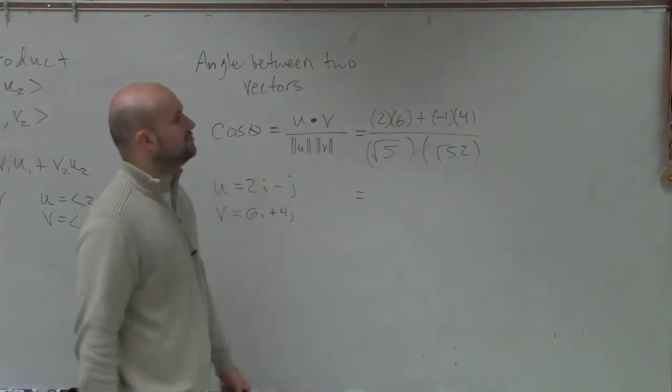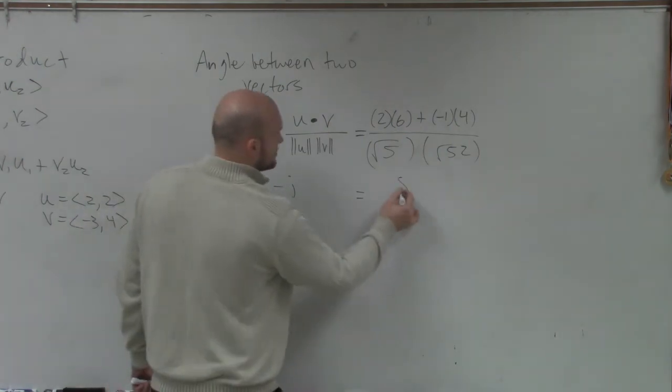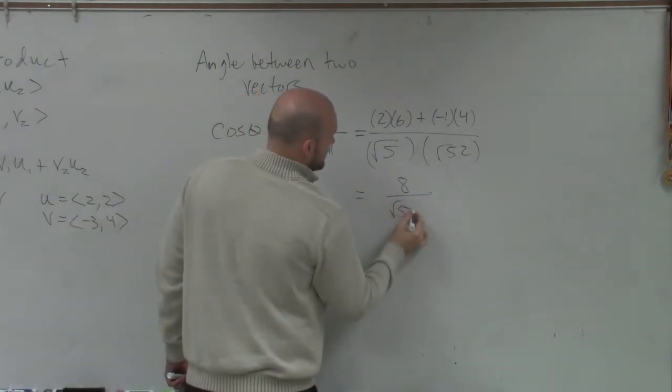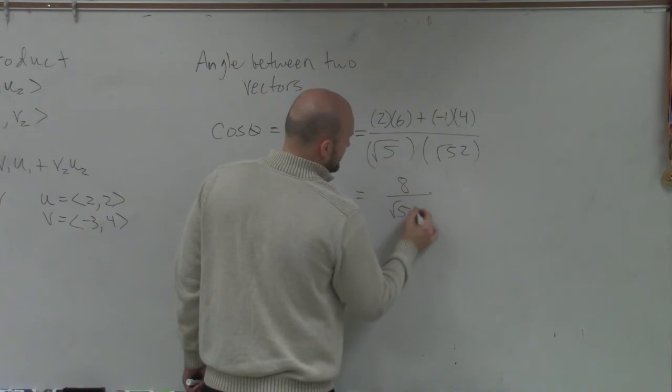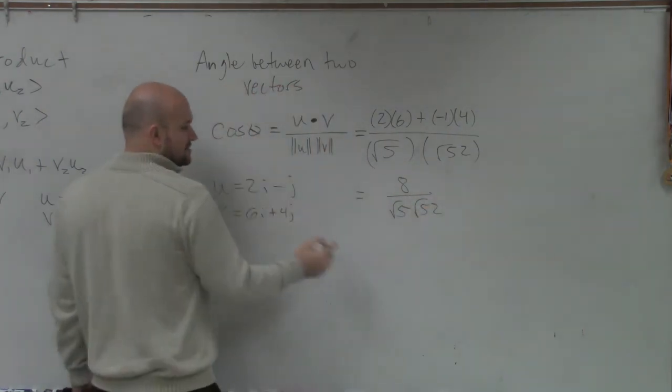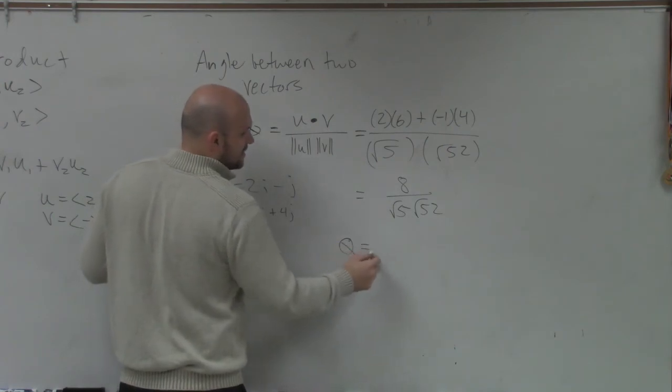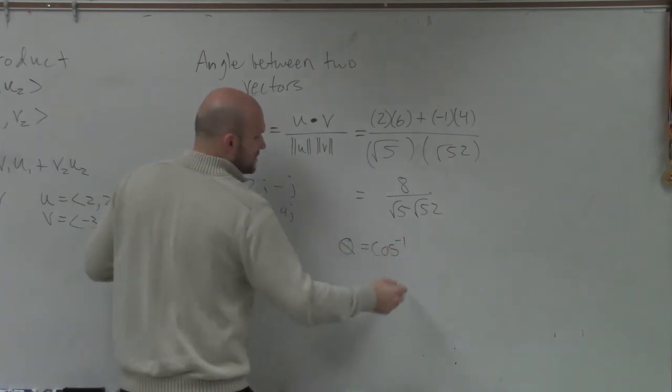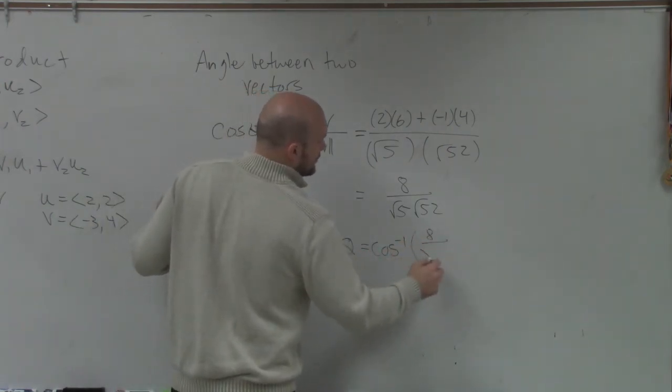We can simplify up top, 12 plus negative 4 is going to be 8. Now, you could multiply the square root of 5 times the square root of 52. But remember, guys, this equals cosine of theta, right? So to figure out actually theta, I'm going to do cosine inverse of 8 over square root of 5, square root of 52.